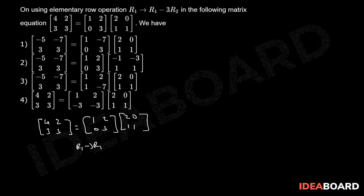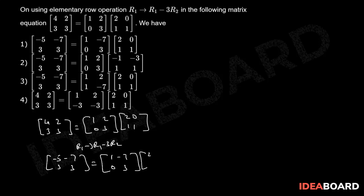we have [-5, -7, 3, 3] equals [1 minus 7, 0, 3, 2, 0, 1, 1]. Therefore, option 1 is the correct option.